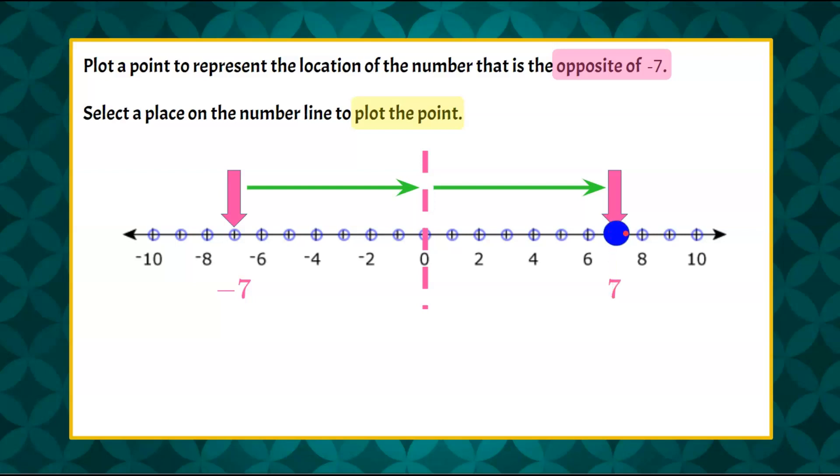So here is the point you should have selected, 7 lying between 6 and 8. So the opposite of negative 7 is 7.